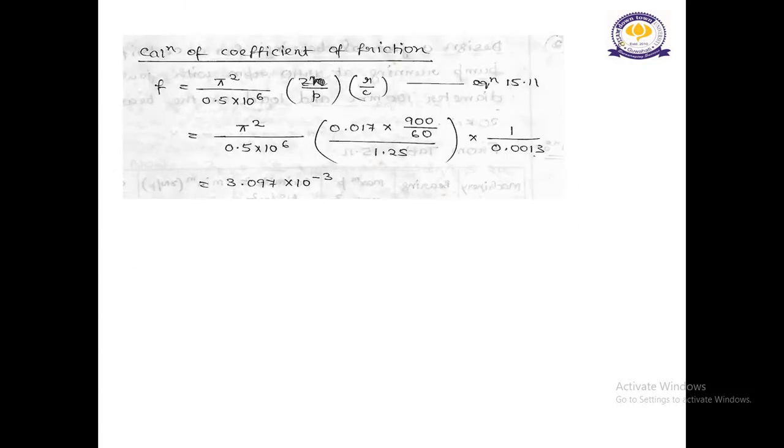Calculation of coefficient of friction. The formula goes like this. Small f equal to pi square divided by 0.5 into 10 to the power 6, Zn by P whole into R by C, which is taken from equation 15.11 from Design Data Handbook. Pi square divided by 0.5 into 10 to the power 6. Z value is 0.017. N value is 900 by 60. And P value is 1.25. And R by C, we have taken as 1 by 0.0013. After calculation, we receive the value of f as 3.097 into 10 to the power minus 3.